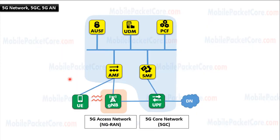In summary, the 5G network contains the 5G access network, NGRAN, and the 5G core network, 5GC. The NGRAN provides the radio interface to the UE, and the node working in the NGRAN is the gNodeB. The 5G core network connects between the 5G access network and the data network, and contains different network functions that we will learn during the following lessons.